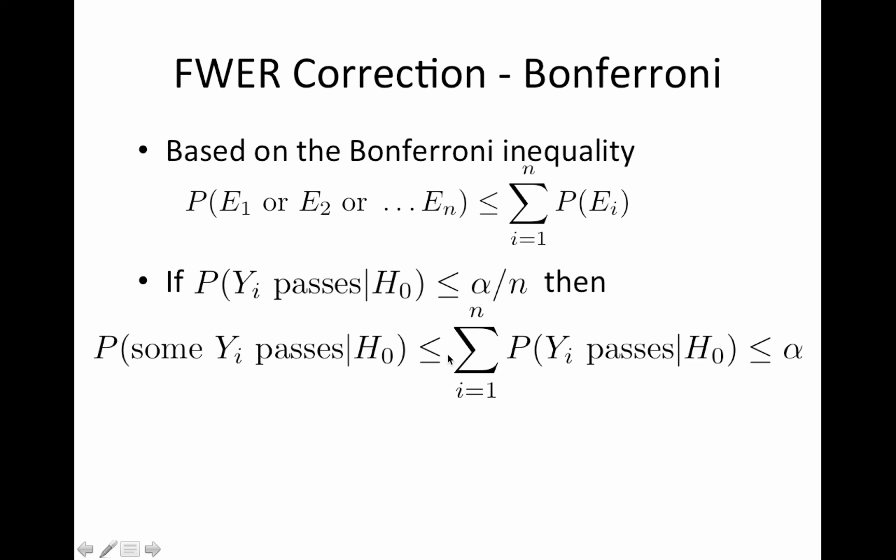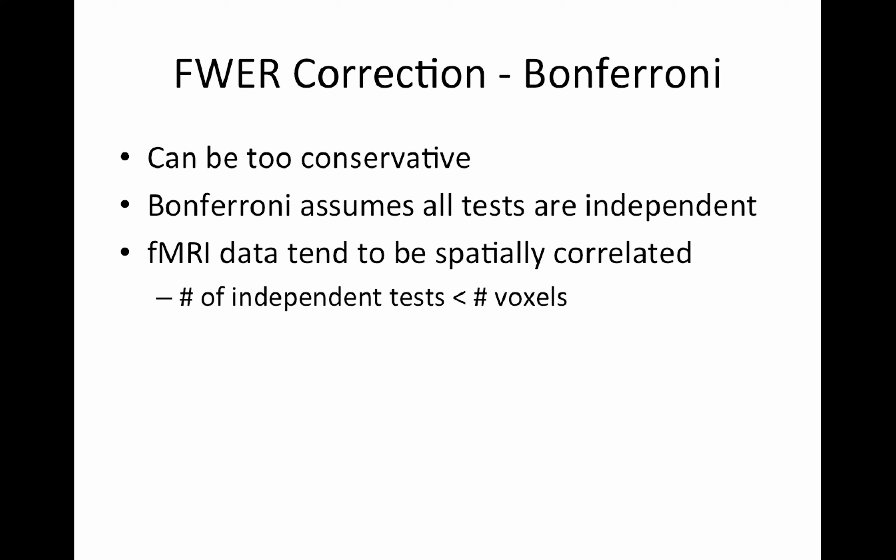Importantly, this is a less than, so we're going to see that Bonferroni can be conservative. So if you have 100,000 voxels, your threshold is going to be 0.0000005, which is super small. And you can go ahead and apply that to your data and see what happens. You probably won't find anything.